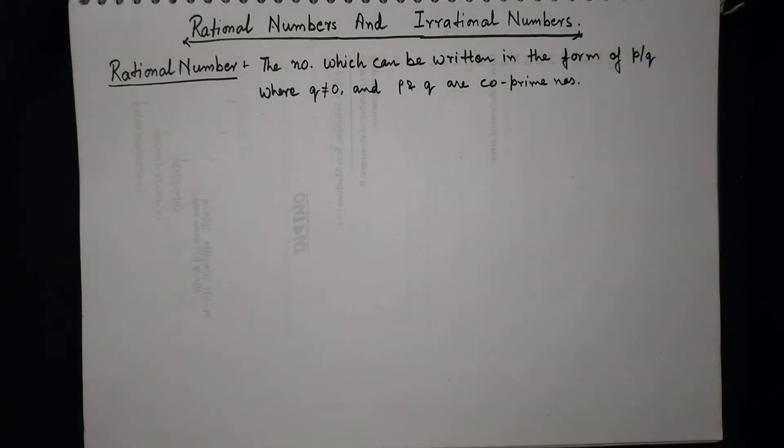So the rational number is the number which can be written in the form of p by q, where q is not equal to 0, and p and q are co-prime numbers. Now I hope you all know, you are all aware of what are the co-prime numbers.